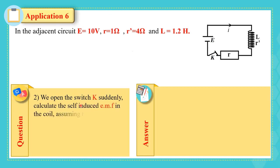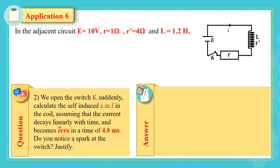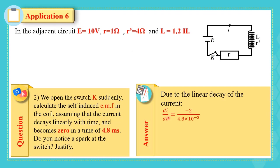When we open the switch suddenly, calculate the self-induced EMF in the coil, assuming the current decays linearly and becomes zero in 4.8 ms. Since the current decreases linearly, di/dt is the slope: di/dt = (0 − 2) / (4.8 × 10⁻³) = −2 / (4.8 × 10⁻³), converting from milliseconds to seconds.